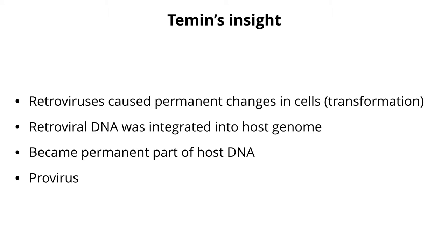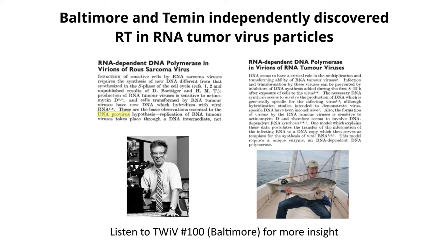Temin and another virologist, David Baltimore, eventually proved the provirus hypothesis. You may remember David Baltimore from the Baltimore Scheme. In the 70s, he had the idea of arranging all known viruses by tracing their pathway to mRNA. His logic was that positive-strand viruses don't need the polymerase in the particle, but negative-strand viruses do. He looked for a polymerase in the particles of the negative-strand virus VSV, and found it. Then when Temin's idea started gaining popularity, Baltimore said there's got to be an enzyme in the particle. He looked for it, and he and Temin both discovered it at the same time, publishing back-to-back papers in Nature.